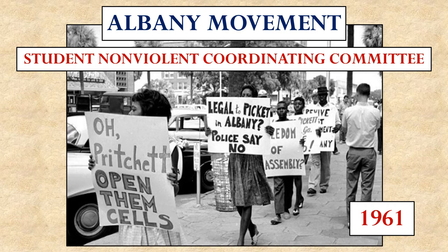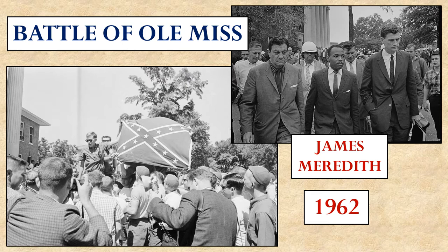Not all places handled protests as peacefully as Albany. For example, in Mississippi, when the University of Mississippi was ordered to desegregate and a man named James Meredith became the first black student to attend there, riots erupted on campus and National Guardsmen had to be called in to put them down. These riots were white people challenging the idea of integration. A battle ensued between protesters and the National Guard, and two people were even killed in what became known as the Battle of Ole Miss.